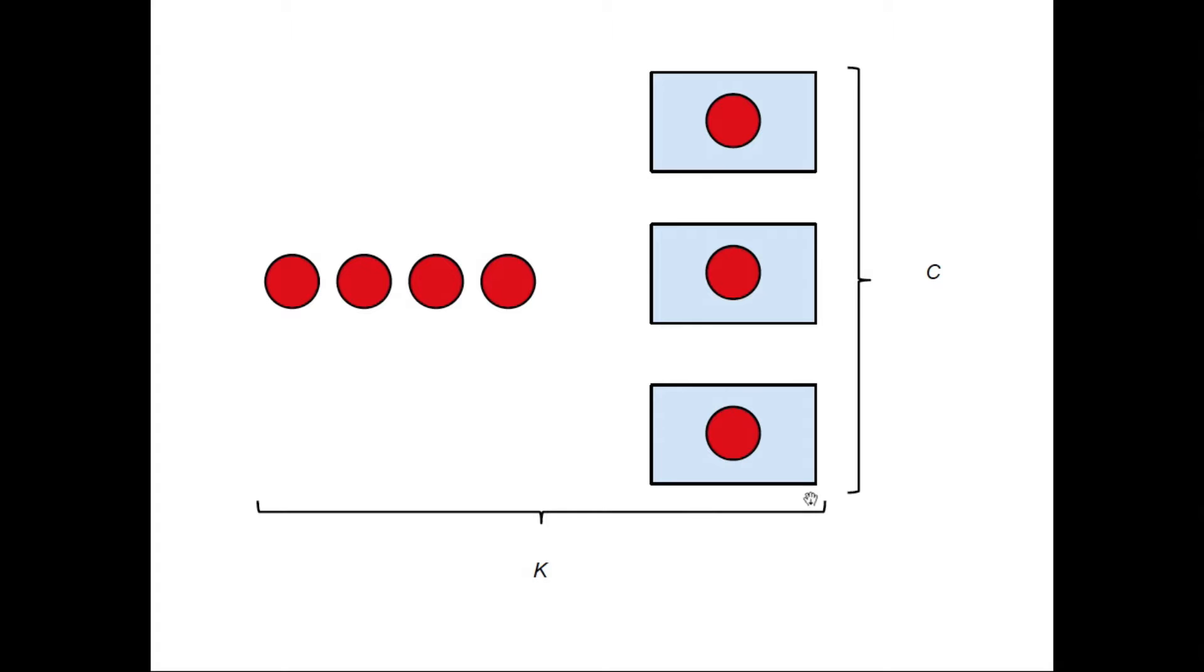And there's a buffer size, so there's a total amount of room in our system. For example, here we have room for four people in the queue and three people in service, so K is seven.